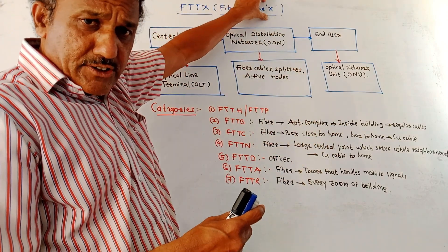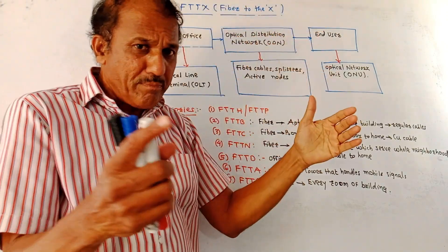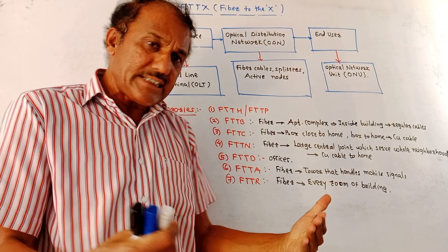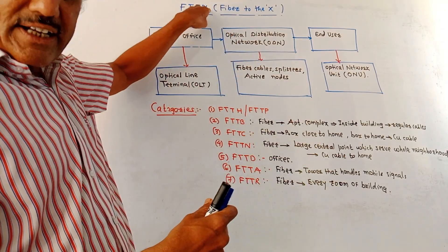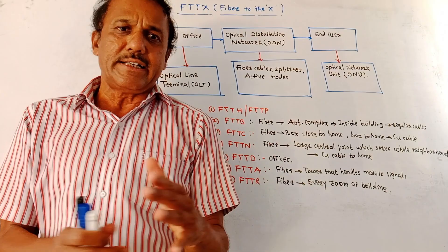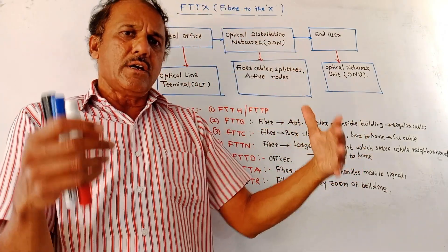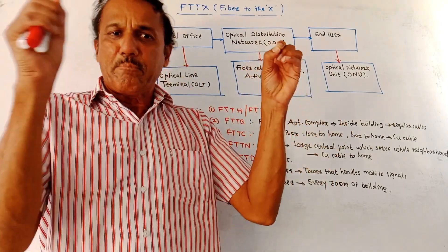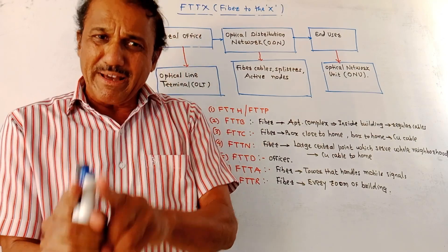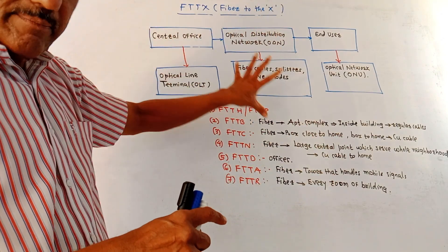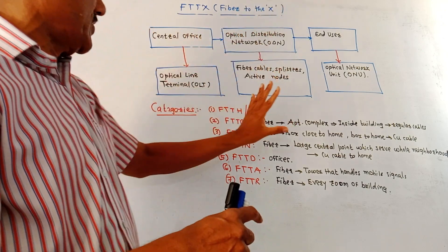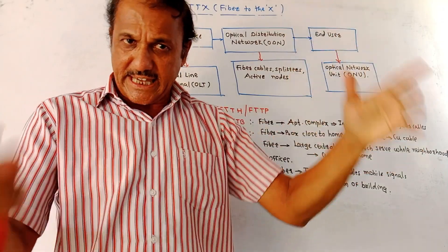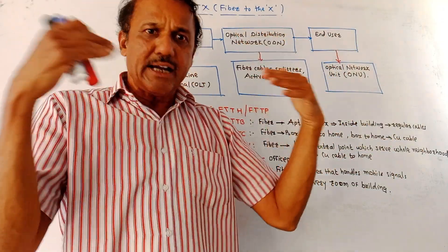X is the general notation. X can be 'home', in which case we use the notation FTTH, or X can be 'premises', so it is FTTP, and so on. If the question asks to draw and explain the block diagram of FTTH or FTTP — fiber to home or fiber to premises — the diagram and explanation remains the same. X can be home, premises, antennas, and so on.